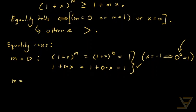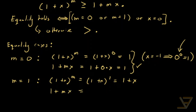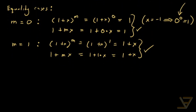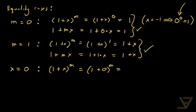The next case is m equals one. One plus x to the power of m equals one plus x to the power of one, which equals one plus x. And the other side, one plus mx, equals one plus one times x, which is also one plus x. So we have equality here too. The final case is x equals zero. One plus x to the power of m equals one plus zero to the power of m, which equals one. And one plus mx equals one plus m times zero, which also equals one. So we have equality in all three cases.